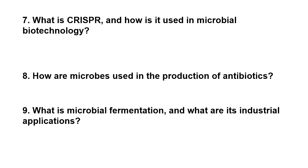What is CRISPR and how is it used in microbial biotechnology? CRISPR — Clustered Regularly Interspaced Short Palindromic Repeats — is a genome editing technology derived from bacterial immune systems. It allows precise modifications of microbial genomes. In microbial biotechnology, CRISPR is used to engineer microorganisms to improve production of biofuels, pharmaceuticals, and enzymes, as well as to study gene function.